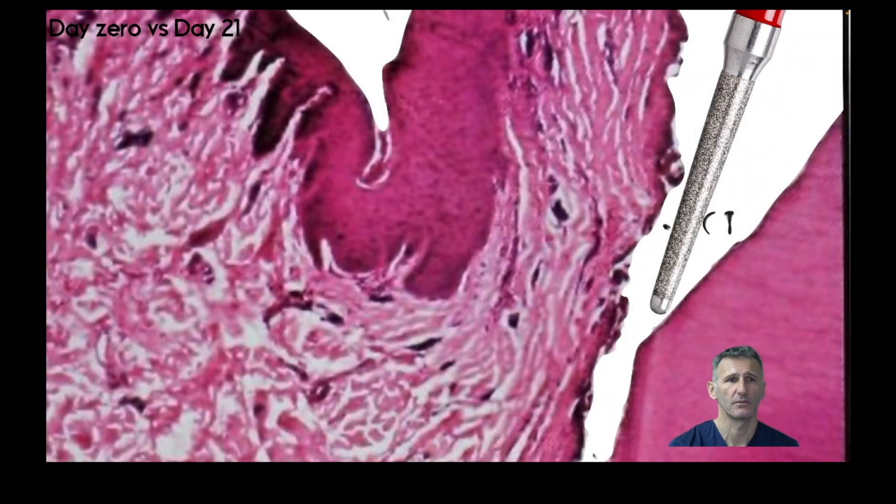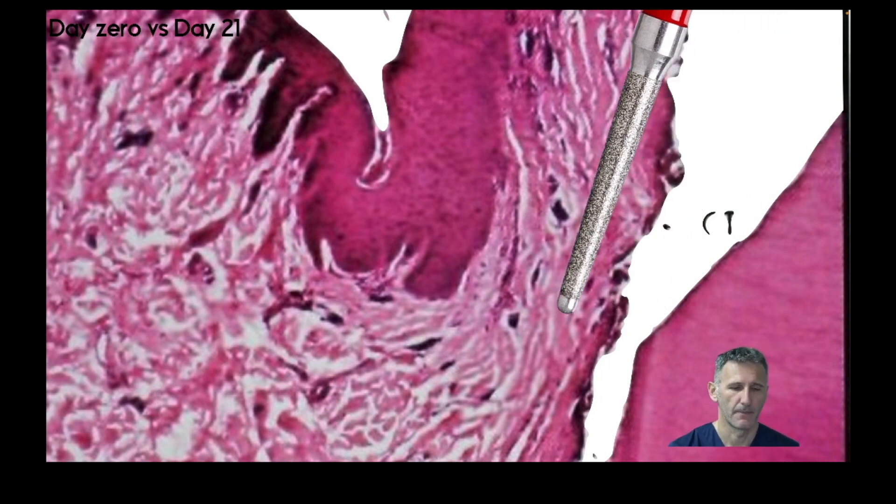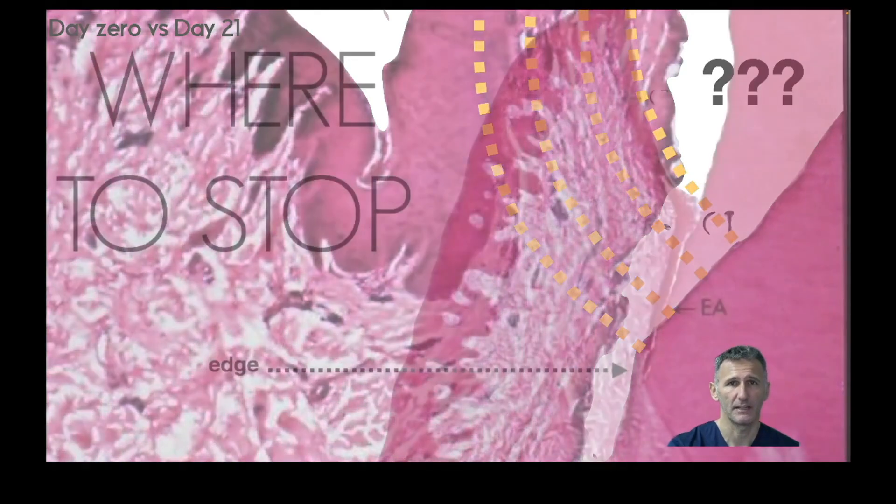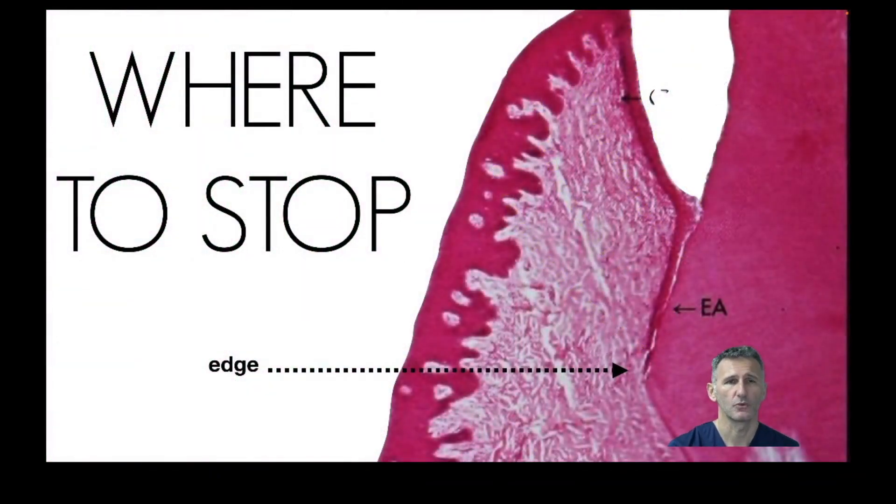This is the problem - on day zero we arrive with the burr in this area. When we rely on the provisional, we rely on the apical part at the edge. Where to stop the provisional?